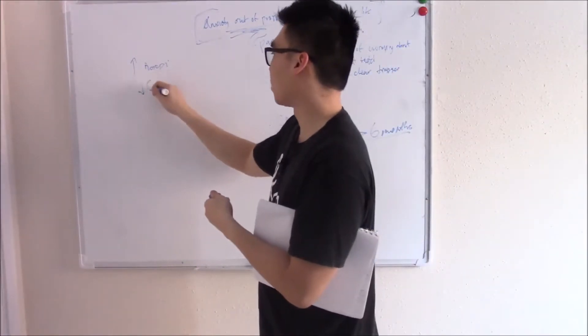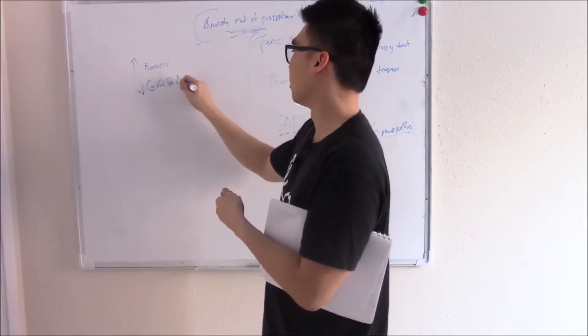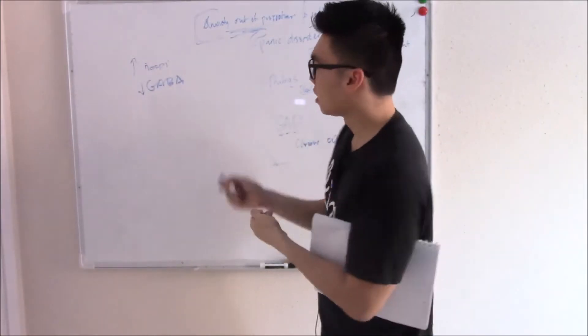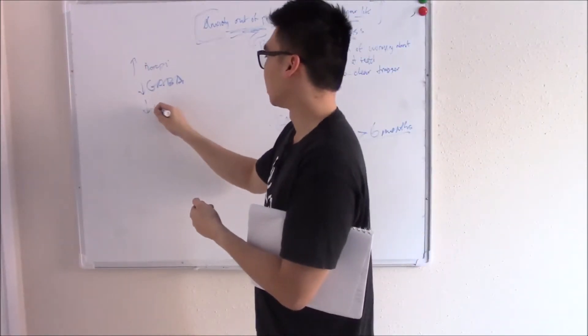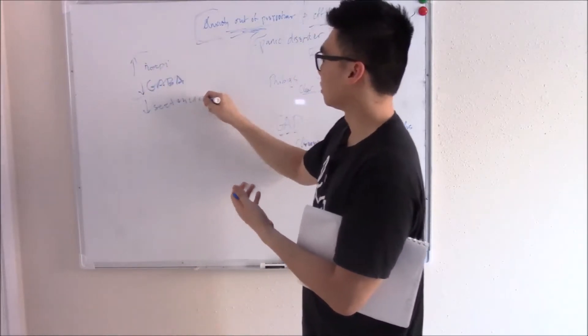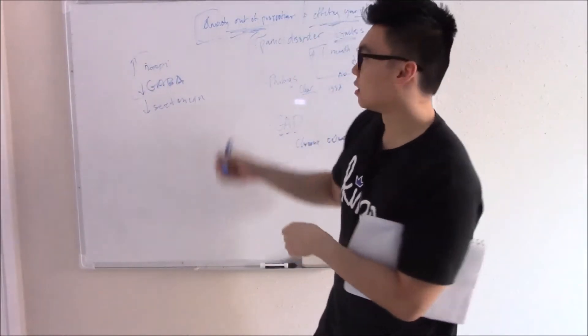decreased things like GABA, which is our inhibitory neurotransmitter. So less relaxation. And then decreased serotonin. The role of serotonin isn't as clear as these two, but decreased serotonin is seen in anxiety disorders.